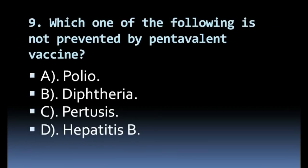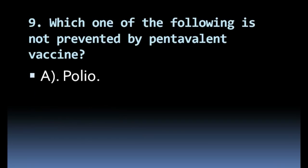Which one of the following is not prevented by the pentavalent vaccine? Options: polio, diphtheria, pertussis, hepatitis B. Correct answer: polio.